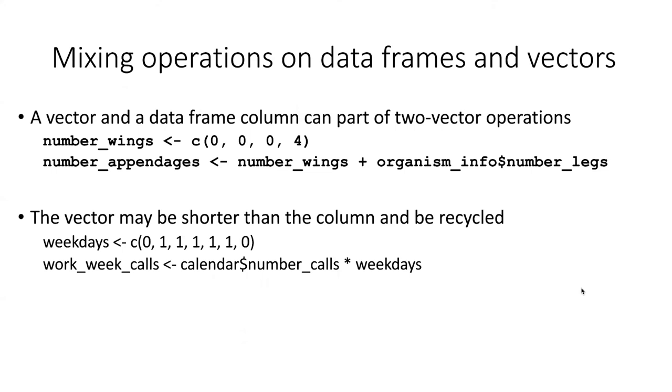For example, in our case where we had a description of organisms telling the number of legs that each one had, we could create a vector where each item in the vector represents the number of wings that those organisms have with the items in that number of wings vector corresponding to the rows from top to bottom in our organism info table. So if we want to find the total number of appendages, which would be wings plus legs, we could simply add this vector that we just created with the column, which is itself a vector. And it would do a pairwise addition between the first item in the vector and the first row in the column, the second item in the vector and the second row in the column and so forth.